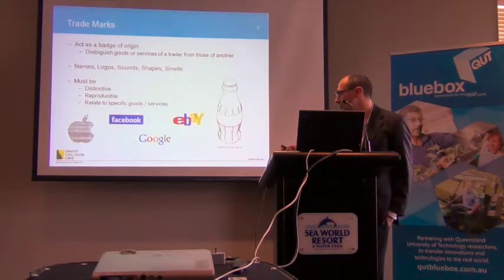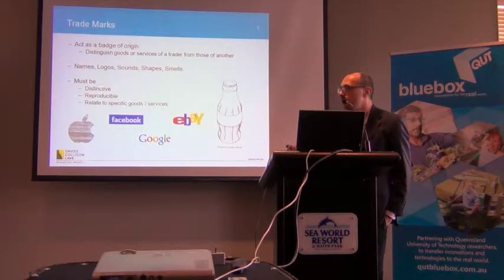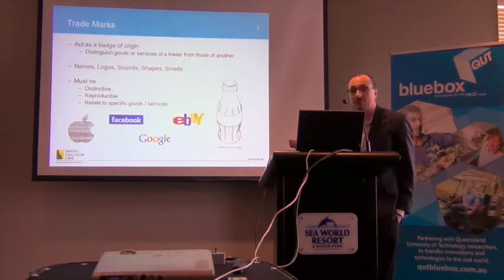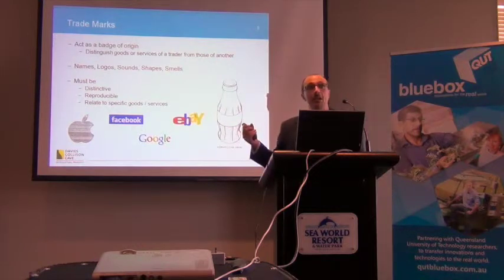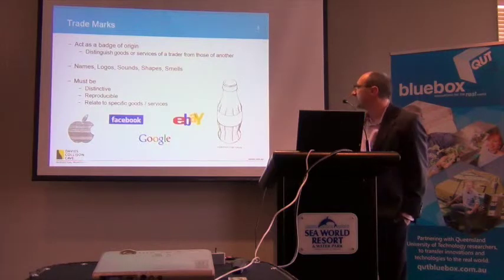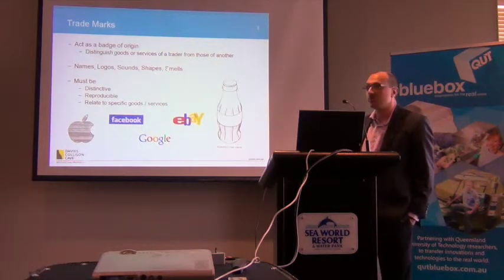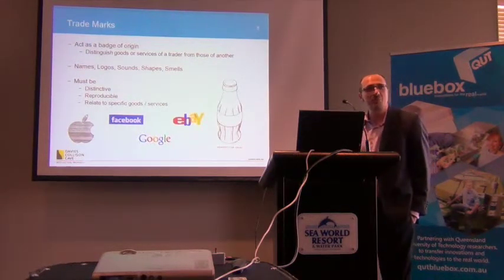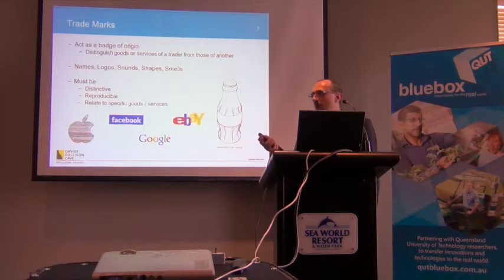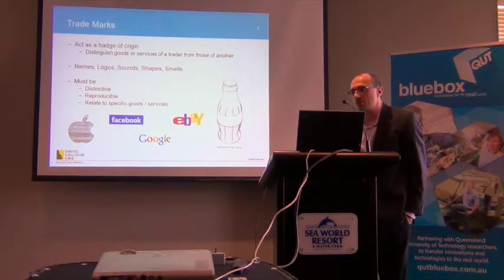To get a trademark, your trademark has got to be distinctive and reproducible — it needs to be something they can put on a register somewhere so everybody can look it up. Of course, that's quite difficult when it comes to things like smells. How do you define a smell? The smell of roses is fairly straightforward, but when you get onto more complex fragrances, that's pretty tricky.